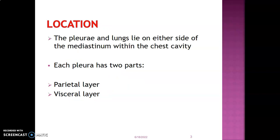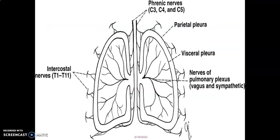The pleura and the lungs usually lie on either side of the mediastinum. Remember, the mediastinum is the central portion of the thoracic cavity in between the right and left pleura containing the lungs. The pleura has two layers: the parietal layer, which is the outer layer, and the visceral layer, which is the inner layer. In between the two there is the pleural space or pleural cavity, which usually has some fluid in it.